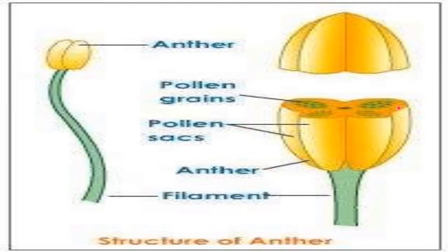Anther is a part of the stamen containing pollen grains. Coming to the history of anther or pollen culture: Tulik in 1953 first obtained mature pollen grains of Ginkgo biloba, a gymnosperm, which can be induced to proliferate in culture to form haploid callus. Goha and Maheswari in 1964 first reported the direct development of embryos from microspores of Datura inoxia.